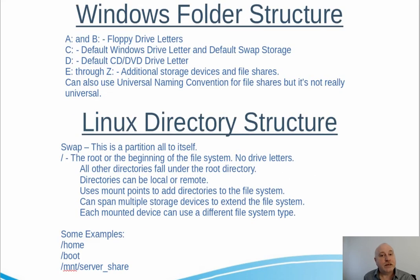The second definition of file system is the way that the directories and files are laid out on the drive, and this is what you'll come into contact with most often. In Windows, you're probably familiar with Drive C as the default Windows installation drive and the default location for almost every program, and Drive D,